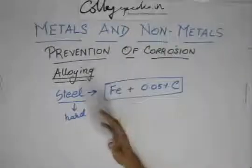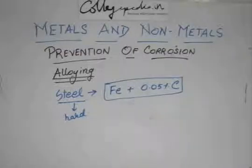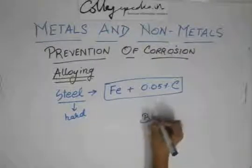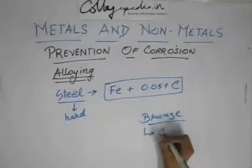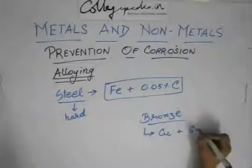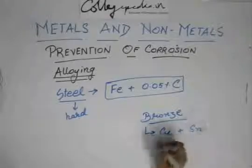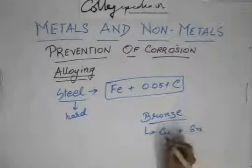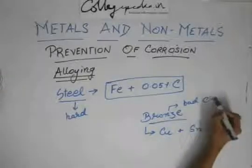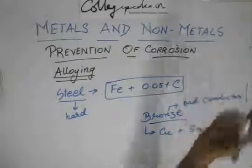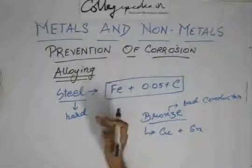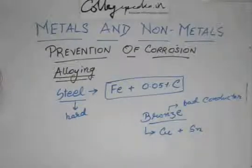Alloying changes the physical properties of substances. Another example is bronze, which is an alloy of copper (Cu) and tin (Sn). Copper and tin are both good conductors of electricity, but bronze is a bad conductor. The physical properties change, and that is why alloying is used to bring favorable changes. Alloying will also prevent corrosion since moisture in the air will not be able to attack so easily.